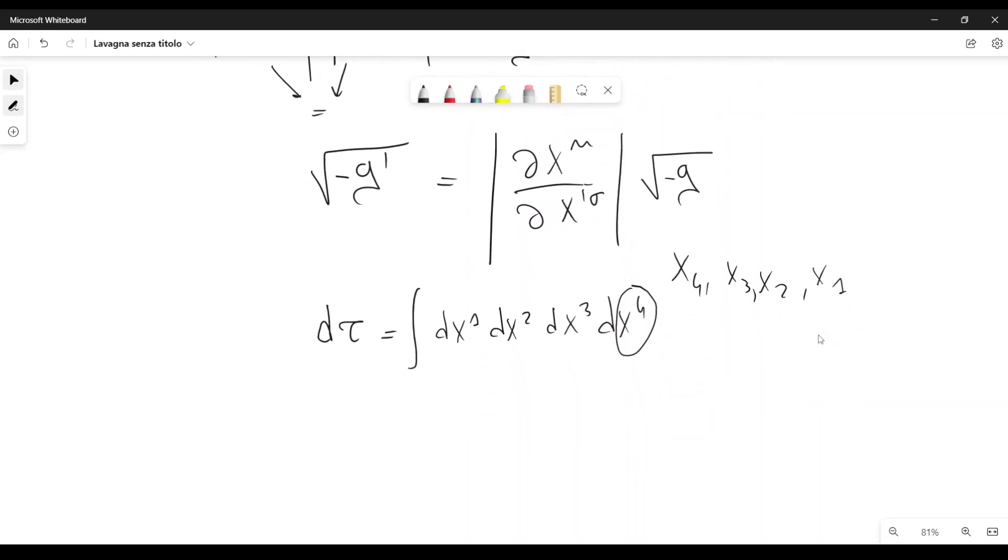And also we know that from multivariable calculus, D tau prime is equal to the determinant of D X prime sigma with respect to X mu, and this multiplies D tau. This is just the rules of the Jacobian because, as I said, this is a Jacobian.